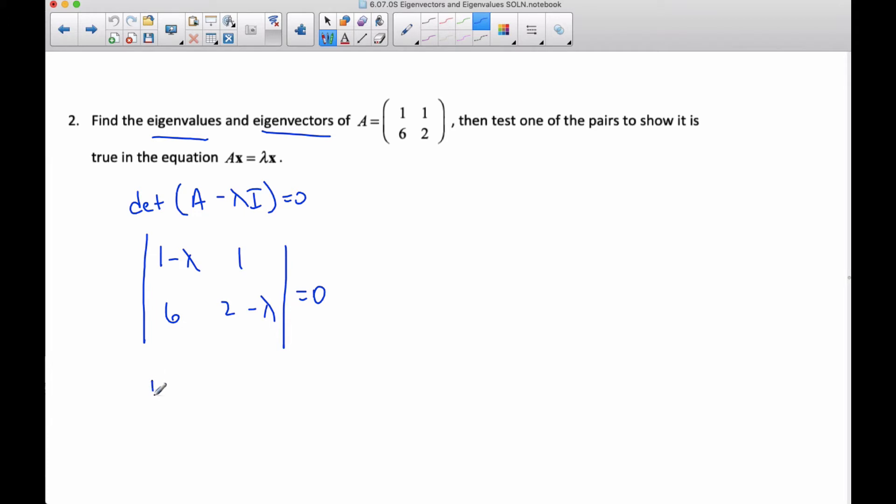And so then I have one minus lambda times two minus lambda minus six equals zero. So two minus three lambda plus lambda squared minus six is zero. And I can say that lambda squared minus three lambda minus four equals zero.